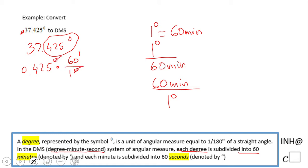We have 0.425 times 60, which equals 25.5 minutes.